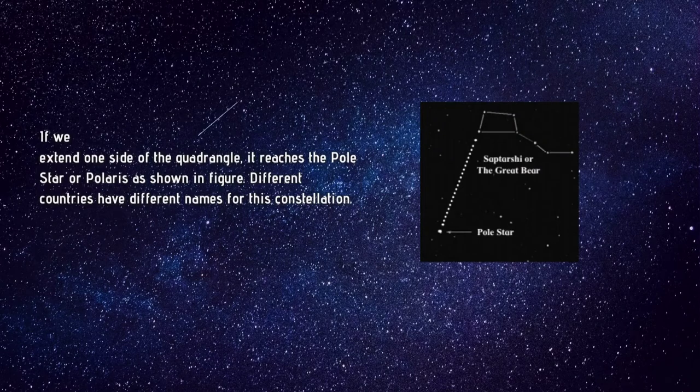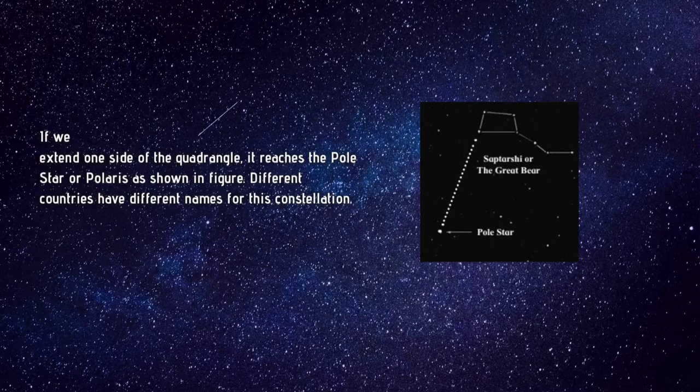If we extend one side of the quadrangle, it reaches the Polestar or Polaris as shown in figure. Different countries have different names for this constellation.